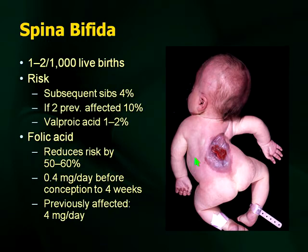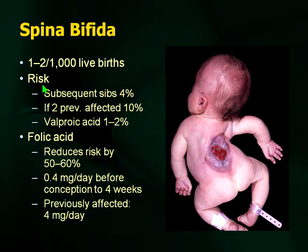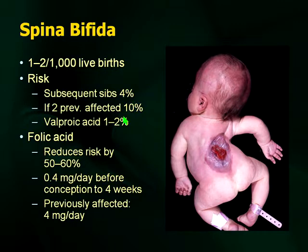Spina bifida is a relatively common congenital anomaly you'll see frequently in pediatric practice. For examinations, there will be questions about recurrence risk and family counseling. Remember there is an increased risk with subsequent siblings of four percent — going from 0.1% to 4%. If you have two previously affected siblings, the risk is ten percent. Also remember valproic acid is associated with neural tube defects — examiners like to ask about drugs that could cause harm.